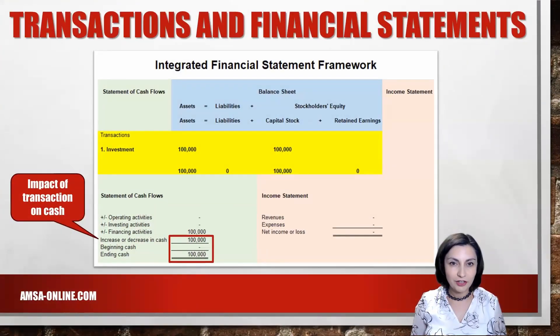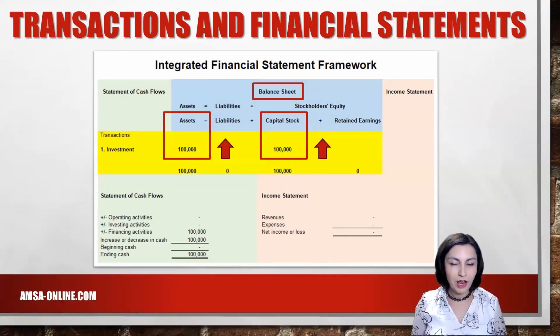The total increase in cash and the ending cash at this point is $100,000. If you have any questions so far, write them down in the comments — I do my best to answer all of them. Now let's look at how this transaction affects the balance sheet. The balance sheet reports the financial condition of a company as of a point in time, for example, as of the end of the year. Under the balance sheet column, both cash, an asset account, and capital stock, a stockholders' equity account, will increase by $100,000.